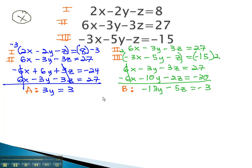Now we're ready to solve this system together using A and B. A, we found out, was simply 3y equals 3. 3y equals 3, and B was negative 13y minus 5z equals negative 3.